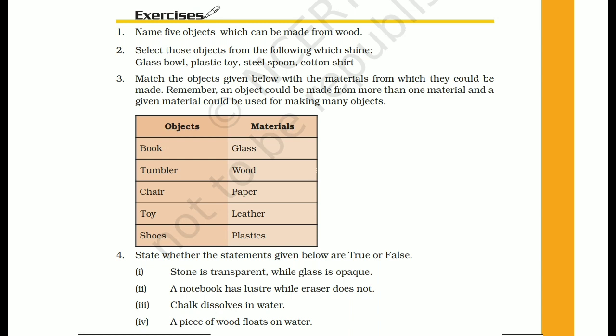Name five objects which can be made from wood. Five objects which can be made from wood are: table, chair, spoon, door, and box.